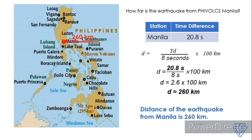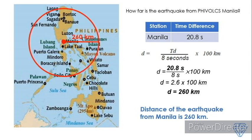So we're going to measure 260 kilometers from Manila. It could be in any direction — we are not sure if it is 260 kilometers to the east, north, west, or south. To account for this, we draw a circle with a radius of 260 kilometers centered on Manila, meaning the earthquake happened somewhere along this circle. Of course, this alone is not sufficient because there is no earthquake with this kind of broad epicenter.